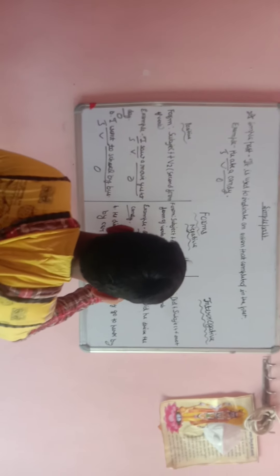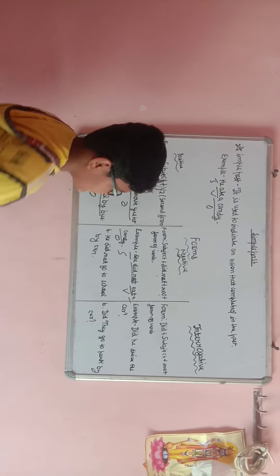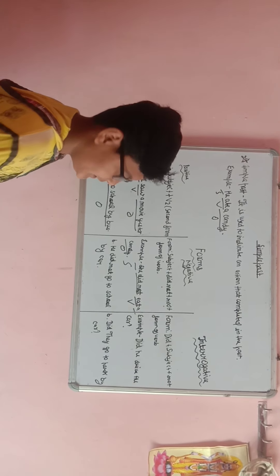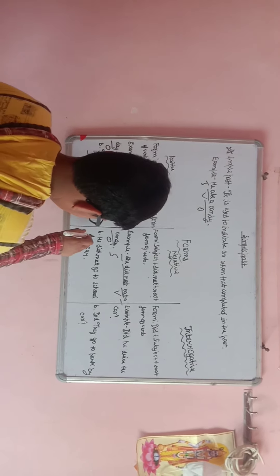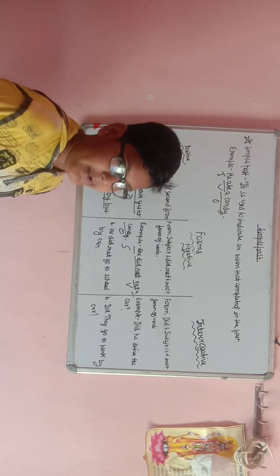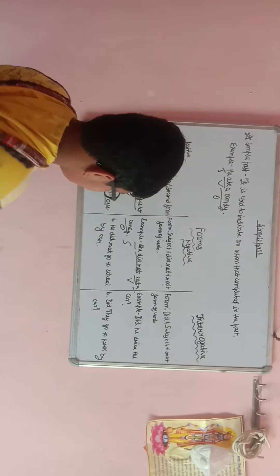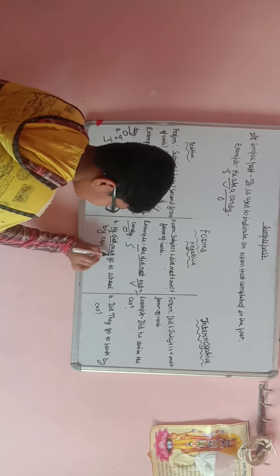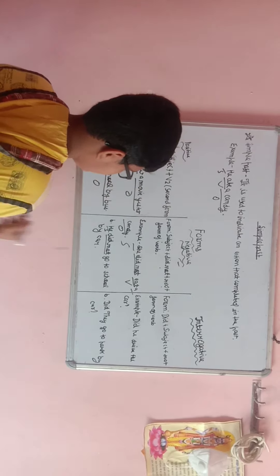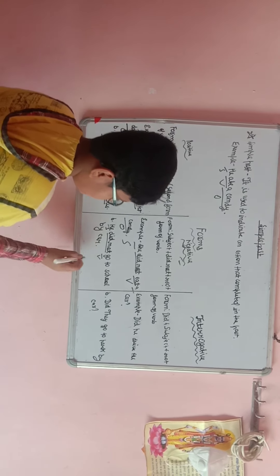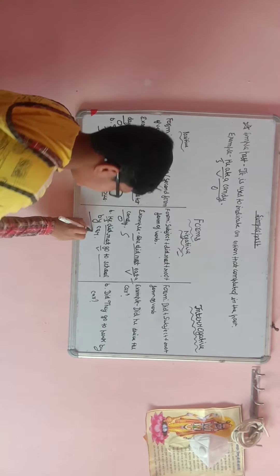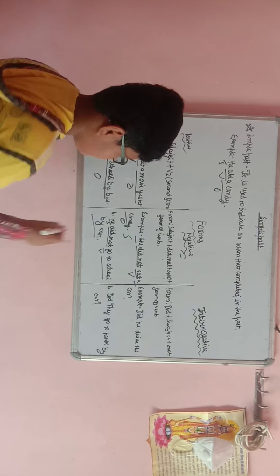We can take one more example: 'He did not go to school by car.' Here 'he' is the subject, 'did not' is added for the negative, 'go' is the verb in root form, and 'to school by car' is the object.